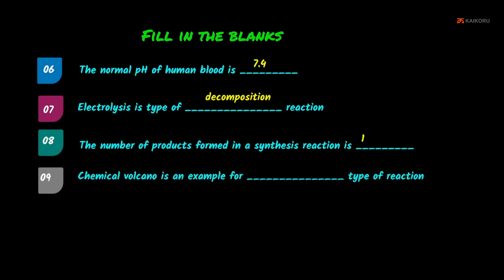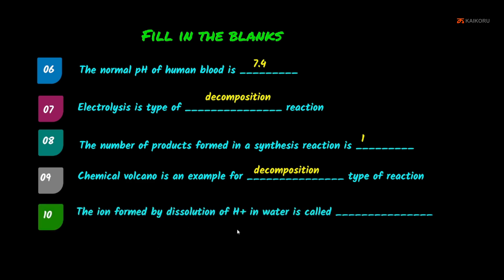Ninth: a chemical volcano is an example of a decomposition reaction. Tenth: the ion formed by dissolution of H⁺ in water is called the hydronium ion (H₃O⁺).